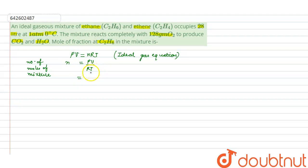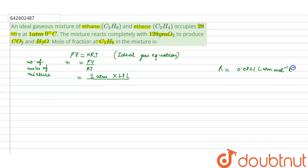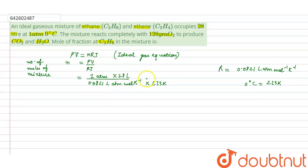Putting in the values: pressure is 1 atmosphere, volume is 28 liters, R is 0.0821 liter·atmosphere per mole per kelvin, and temperature is 0 degree Celsius converted to 273 Kelvin. The units cancel — atmosphere, liter, and kelvin all cancel — leaving moles. Calculating this gives 1.25 moles, which is the total number of moles of the mixture.